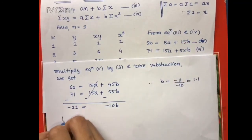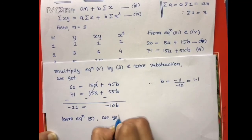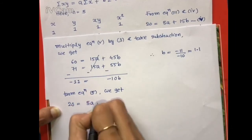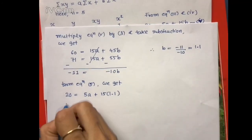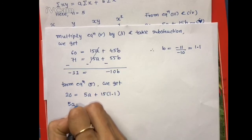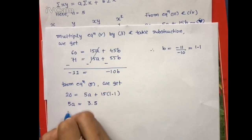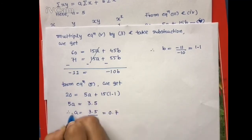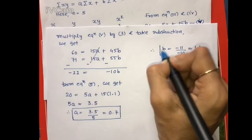Now substituting b = 1.1 into equation 5: 20 = 5a + 15×1.1, so 5a = 3.5, therefore a = 3.5/5 = 0.7. So we get a = 0.7 and b = 1.1.